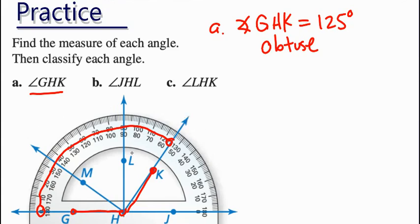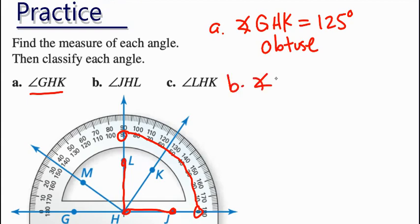If we look at J, H, L, so again, start at J, go to H, go to L, we highlighted the angle. If we start at zero and we keep on that path to the angle, it's 90. So we can say that angle for problem B, angle J, H, L is equal to 90 degrees. It is a right angle.